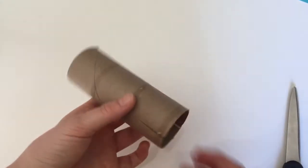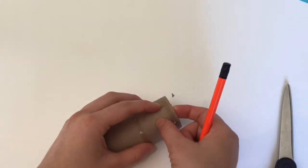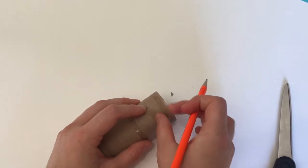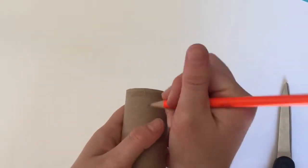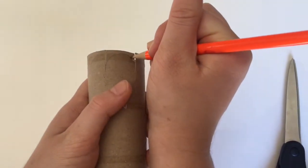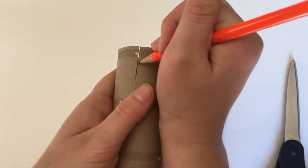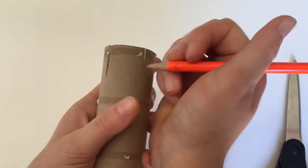So once you cut your slits you can draw the petal shape that you want on the edge of each flap. So on this one I'm gonna make it rounded and so I'm just gonna draw that on every flap, and then cut it out.